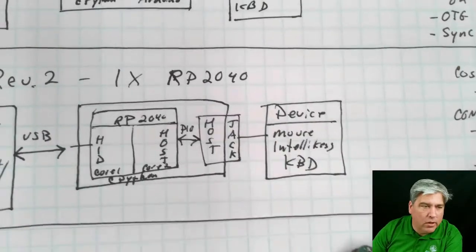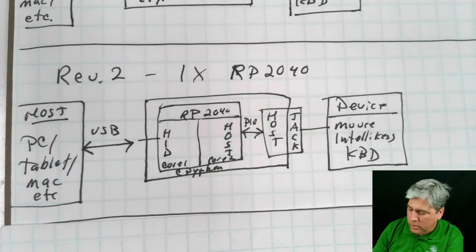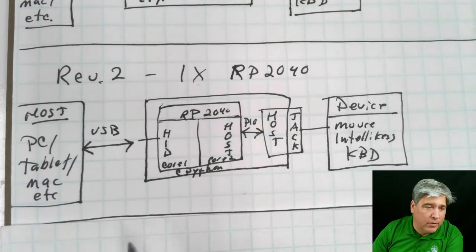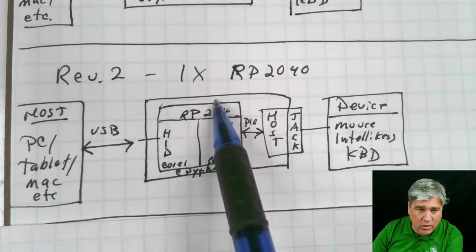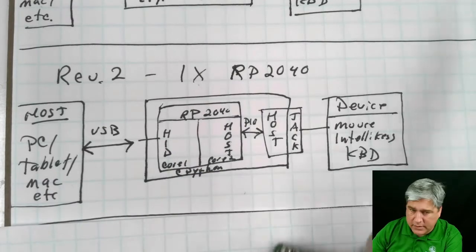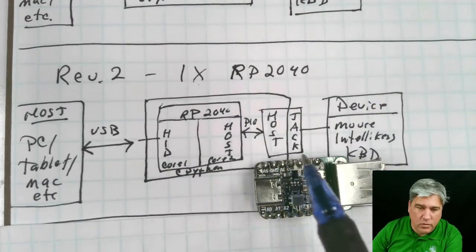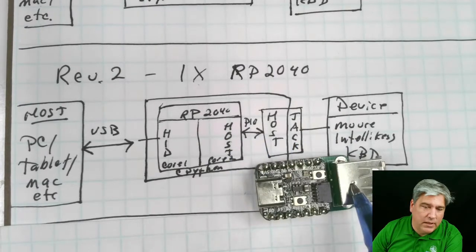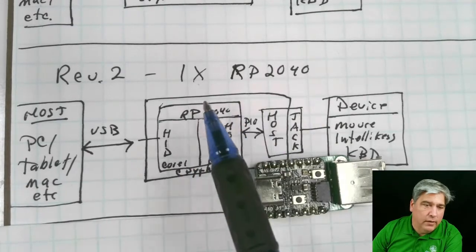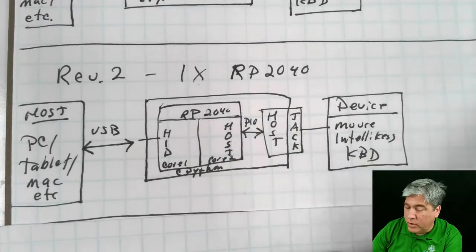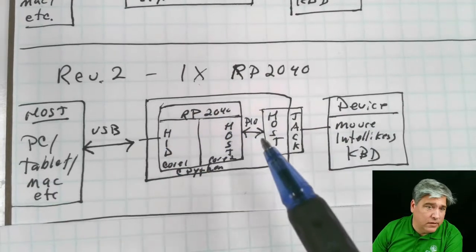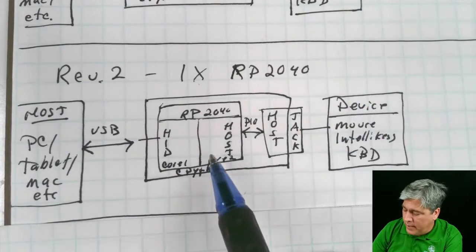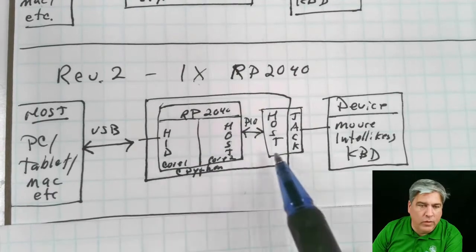If we look at how this one would work, the Rev2, which has one RP2040 in it. We still have the host over here on the left that we're trying to talk to, the PC, the tablet, or the Mac. It talks USB into the RP2040 CutiePie board. And then this uses what's called PIO to talk directly to the USB jack. So we only have one chip that we're managing here. It has two cores. We could use both cores. Or we could just have a task that runs one after the other.